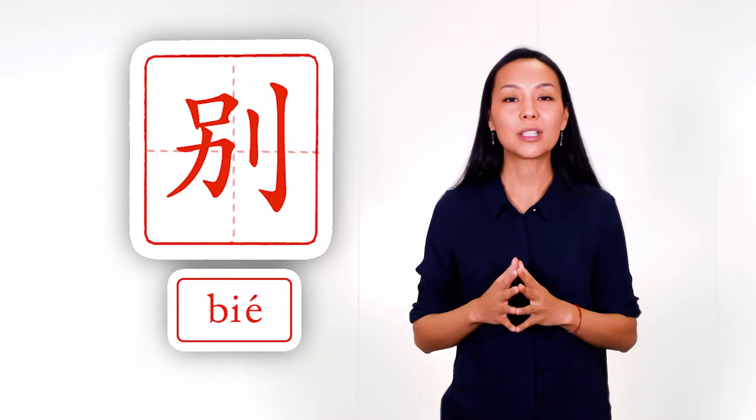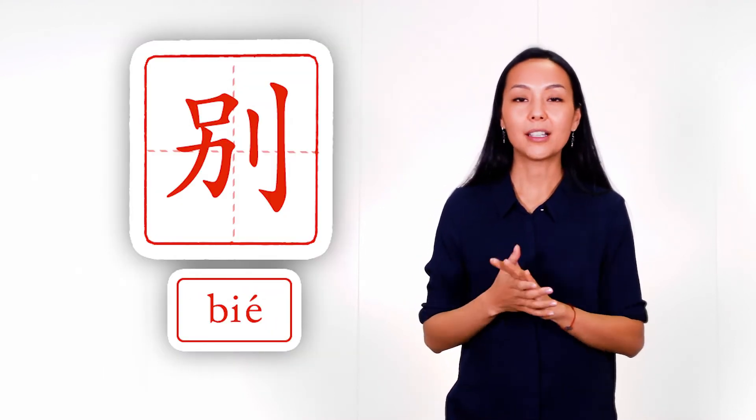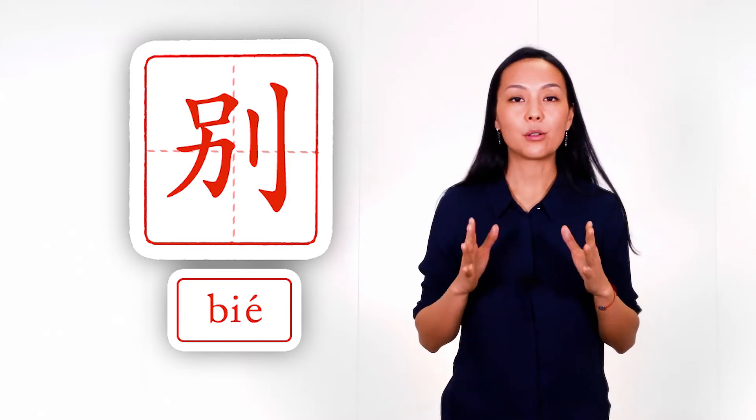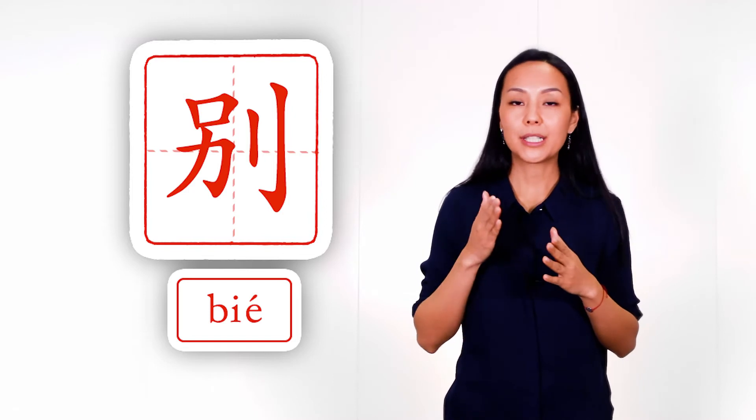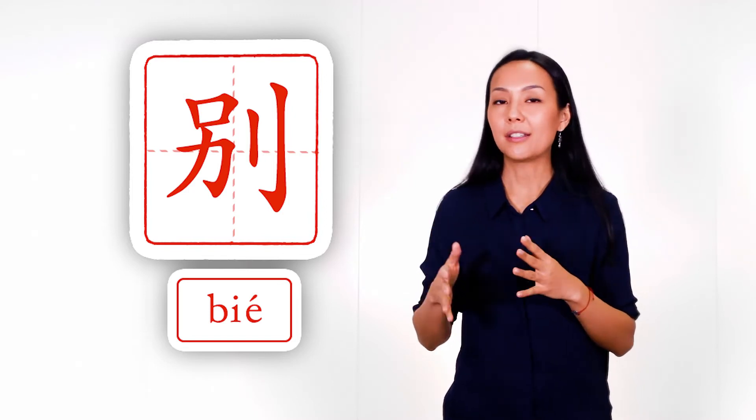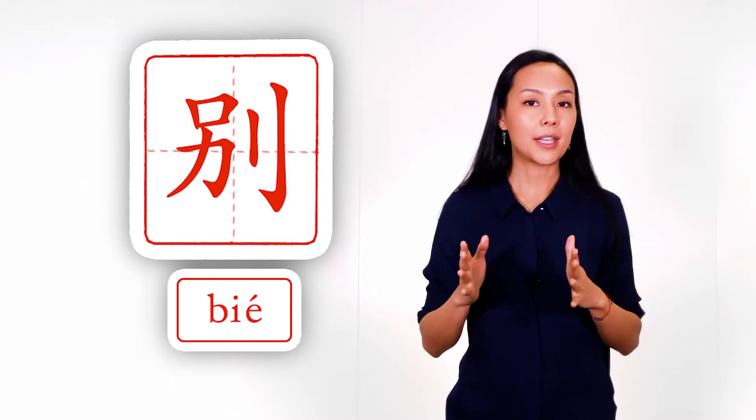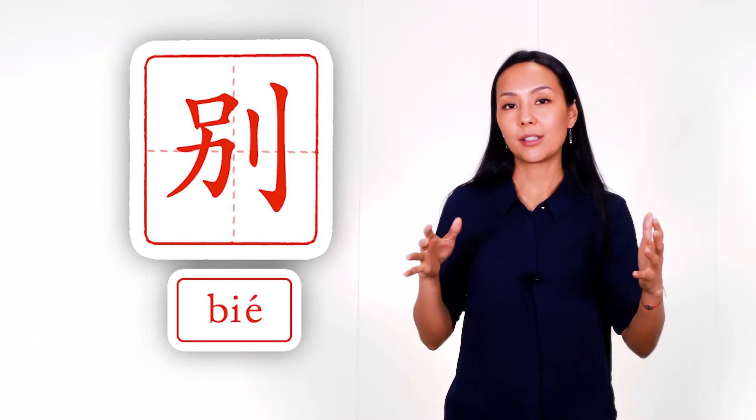And the second example is the word difference, bie, and here we see knife on the right, and usually knife separates things and differences. These are things which separate us from each other.